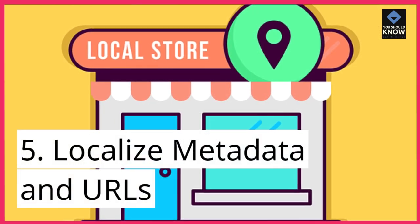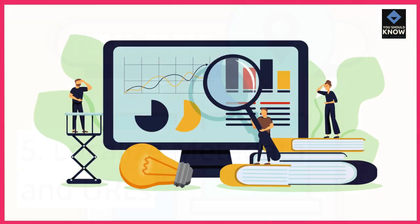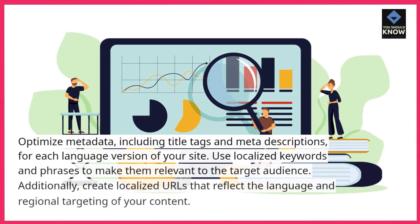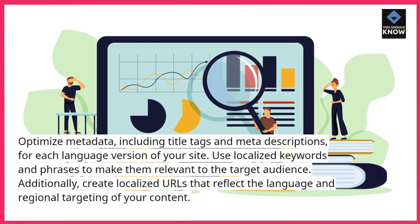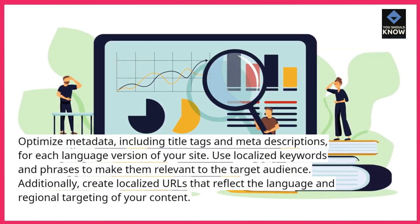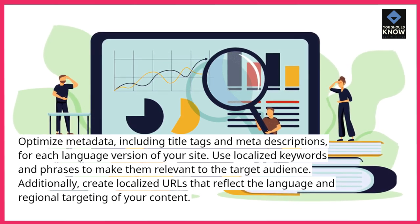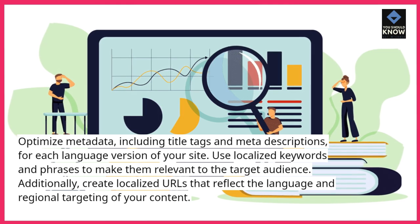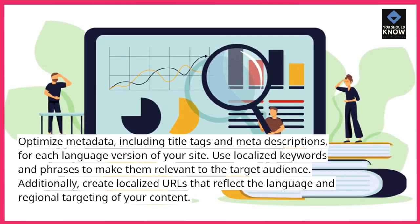5. Localize metadata and URLs. Optimize metadata, including title tags and meta descriptions, for each language version of your site. Use localized keywords and phrases to make them relevant to the target audience. Additionally, create localized URLs that reflect the language and regional targeting of your content.